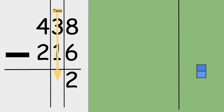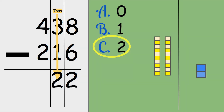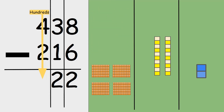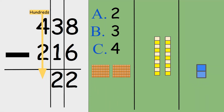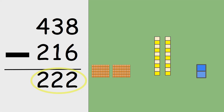Now the tens: three take away one — is the answer zero, one, or two? Three take away one is two. And last, to finish this question, we need to solve the hundreds: four minus two. Four take away two is two. So this tells me 438 minus 216 is 222.